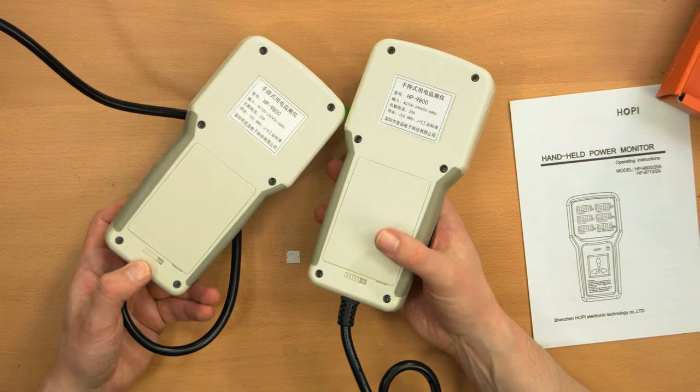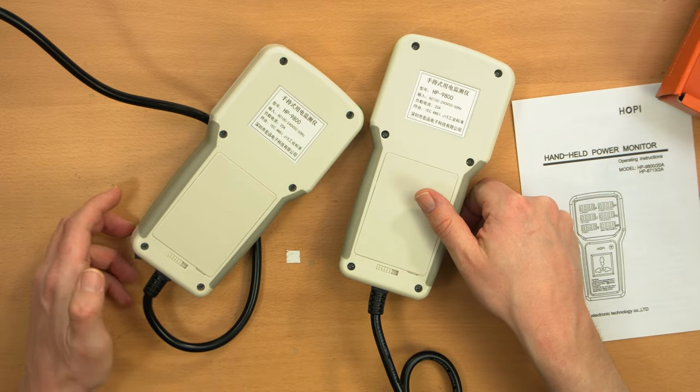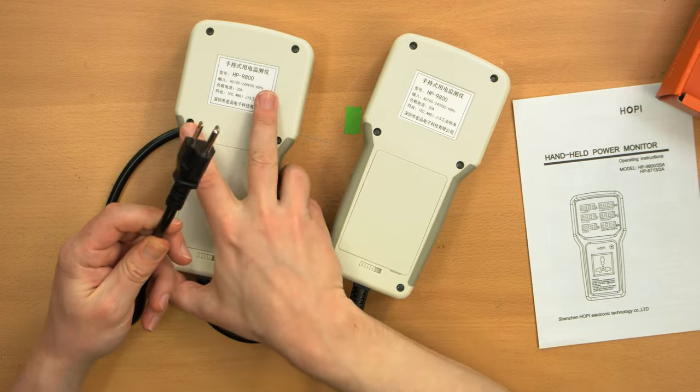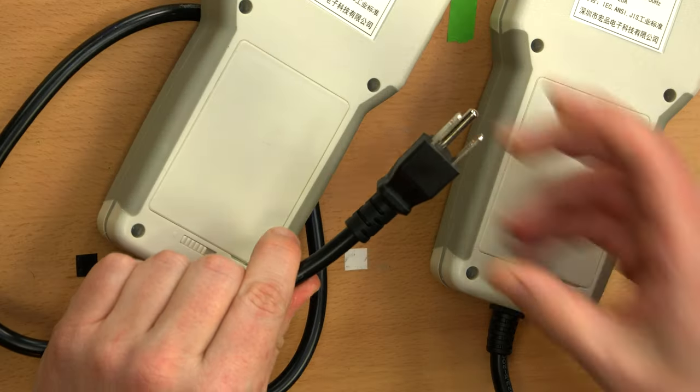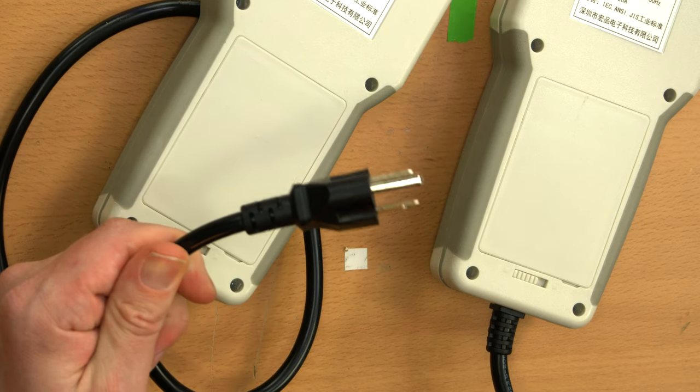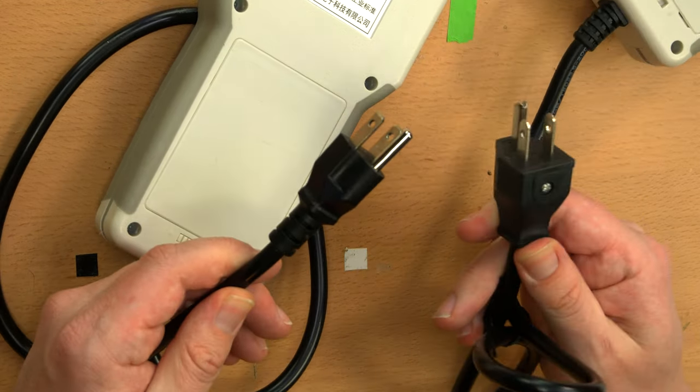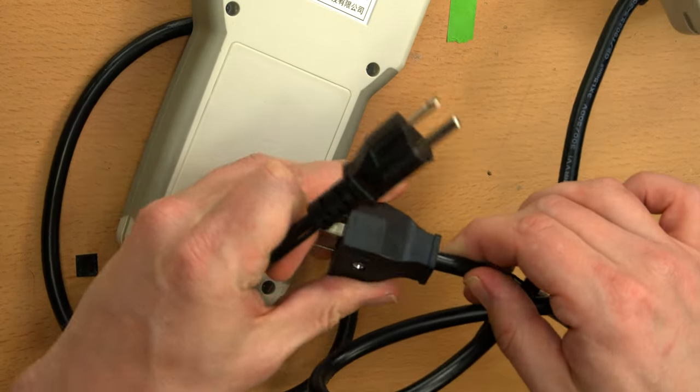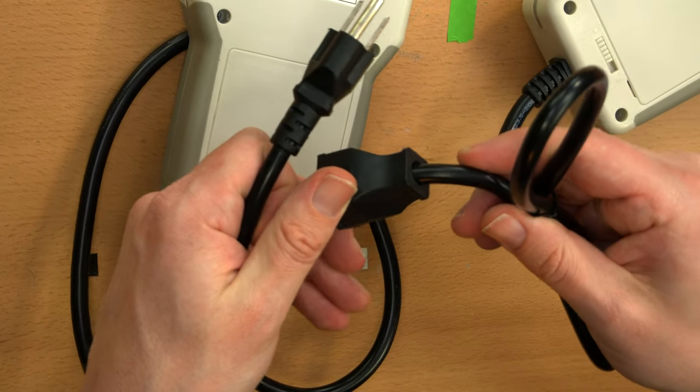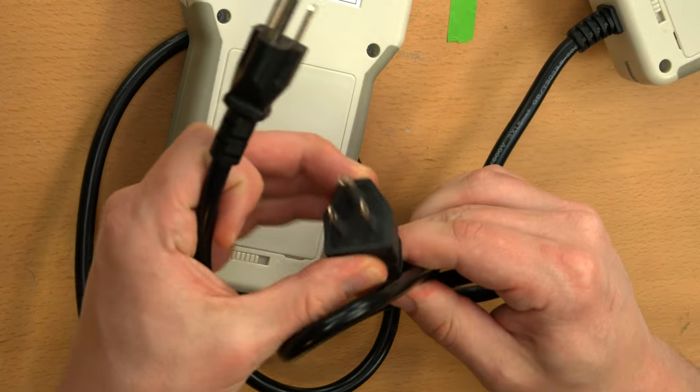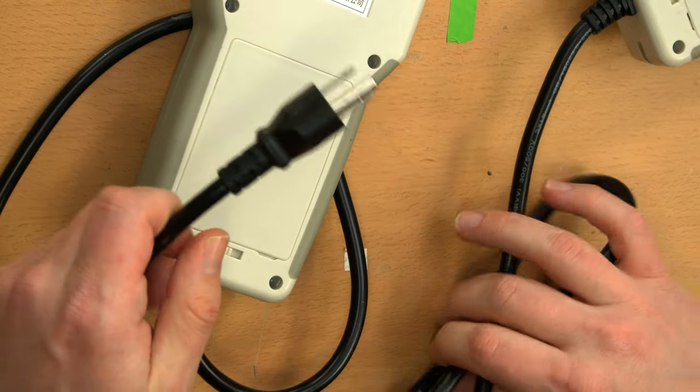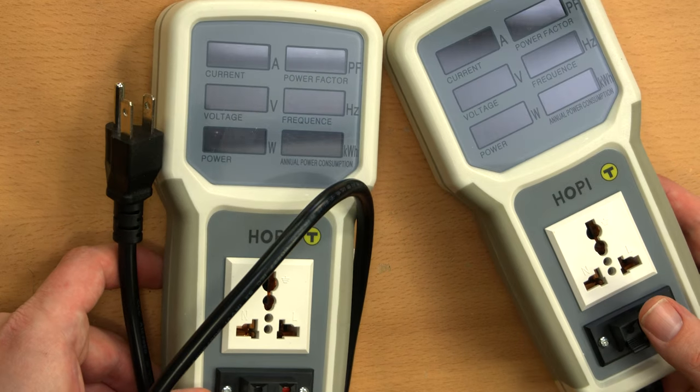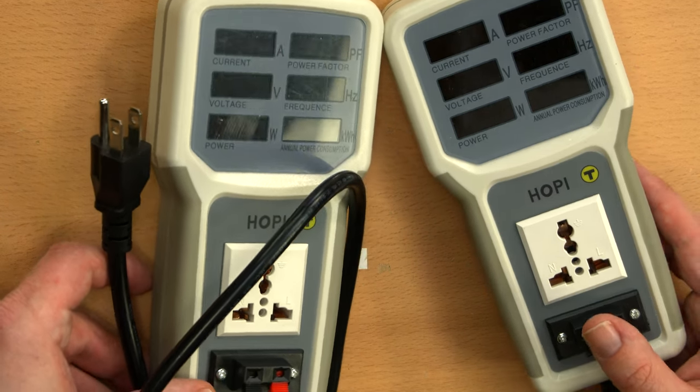So these are both identical on the back. They both have this weird compartment that opens up for no apparent reason. One difference I will note is this one here has a standard molded plug on the end. This one, however, has a screw and a very flimsy feeling plug. Very cheap plastic and not very well secured. No strain relief on it either. I'm not a fan of this plug.